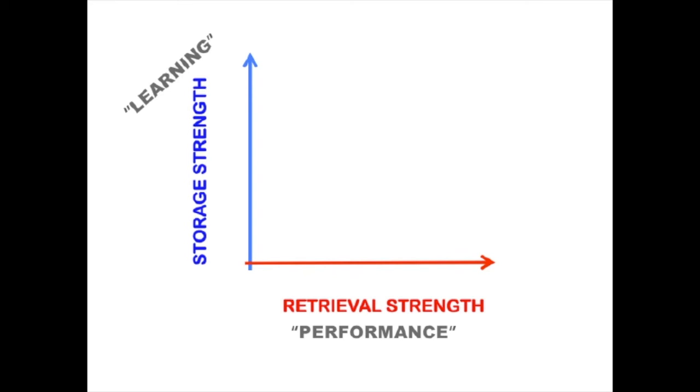Let's consider some examples that help clarify the distinction between the two. What is your hotel room number here at this conference? The number should come very easily to mind. It has high retrieval strength, but it is not actually well-learned. It has low storage strength. You won't remember this number next year, just as you probably do not remember your hotel room number from last year. This hotel room number from last year has both low retrieval strength and low storage strength.